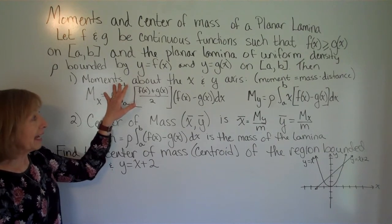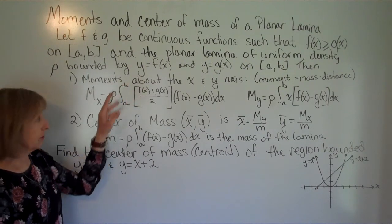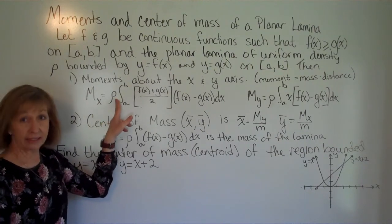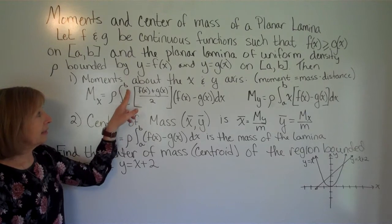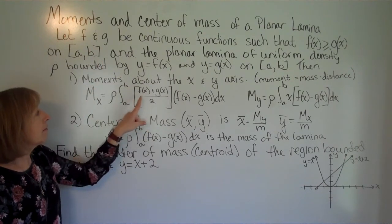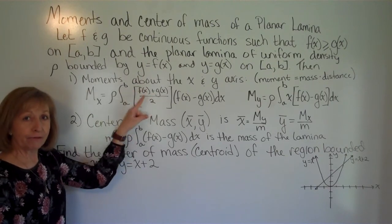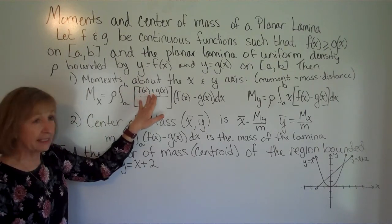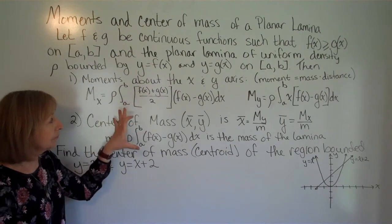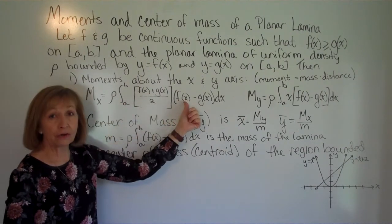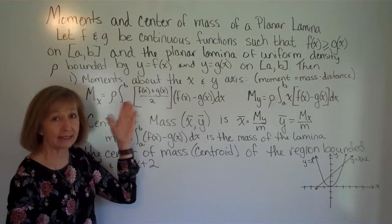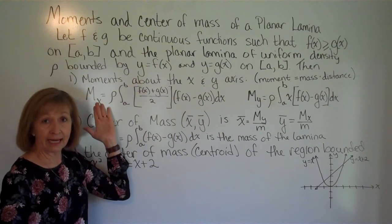The moment about the x-axis and y-axis are as follows. The moment about the x-axis is your density rho times the definite integral from a to b of the average of the function values in each strip — so [f(x) + g(x)] / 2 — times f(x) minus g(x), dx. That's your moment about the x-axis.